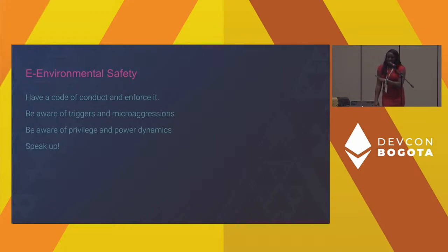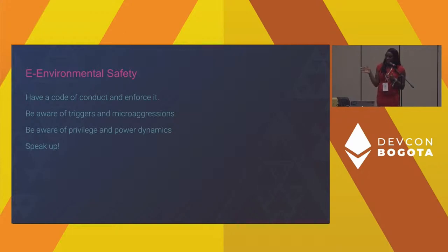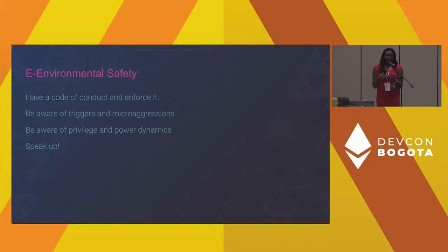Environmental safety is a huge one. It's important to have a code of conduct and procedures that actually follow through on those code of conducts. As people we have biases, and the code of conduct is supposed to be the guidance and policies put in place to mitigate those biases. Having a code of conduct is helpful, but you also need to be enforcing it.